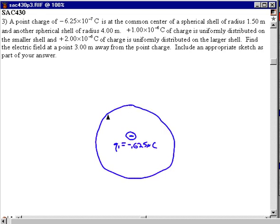The amount of positive charge I'll call Q2 is one microcoulomb, and then we get two microcoulombs on a larger shell.